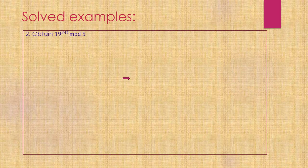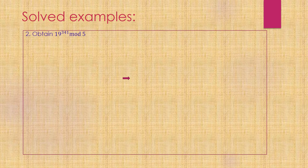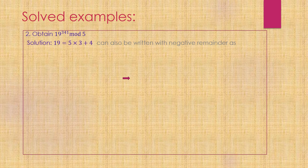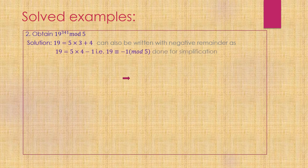Second example: obtain 19^341 modulo 5. I need to find the remainder when 19^341 is divided by 5. Using Euclid's algorithm, 19 equals 5 times 3 plus 4, so the remainder is 4. But if I get the remainder to be 1, it's easier to raise to any power. This same relation can be written using negative remainder: 19 equals 5 times 4 minus 1. So 19 is congruent to -1 modulo 5, for simplification.